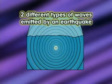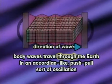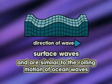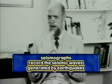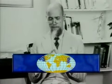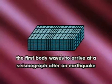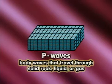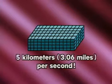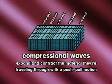Two types of waves emitted by an earthquake are body waves and surface waves. Body waves travel through the Earth in an accordion-like push-pull oscillation. The first body waves to arrive at a seismograph after an earthquake are called P-waves, or primary waves. P-waves are body waves that travel through solid rock, liquid, or gas at a speed of about 5 kilometers, or 3.06 miles, per second. P-waves are also called compressional waves because they expand and contract the material they're traveling through with a push-pull motion.